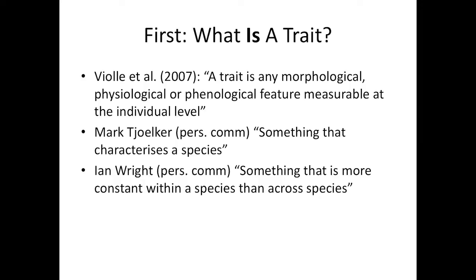Relative growth rate also depends on so many other things — plant size, temperature, environment. So I was moving away from Mark's definition and towards a definition Ian gave me a couple of years ago: a trait is something that's more constant within a species than across species. I found that really quite helpful, because we know everything you can measure on a plant varies, but if the variation is across rather than within species, that gels with my way of thinking.